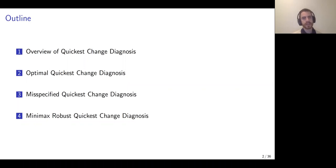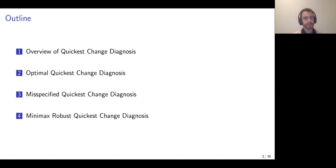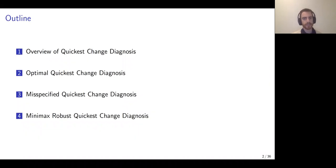I'll give an overview of the problem, then describe some of the approaches formulated in the statistics and information theory literature when the changes that need to be detected and classified are unknown to within a finite set of candidates. I'll then talk about recent work on misspecified Quickest Change Diagnosis and Minimax Robust Quickest Change Diagnosis, both of which consider the case where the unknown changes belong to a potentially infinite set of candidates.